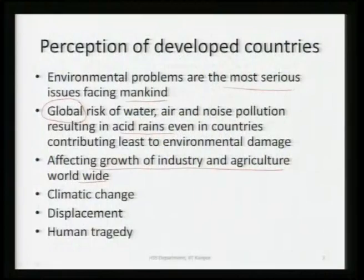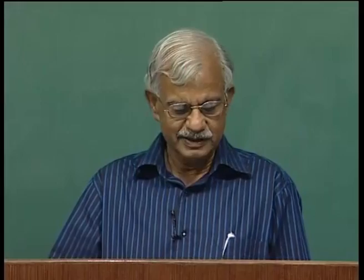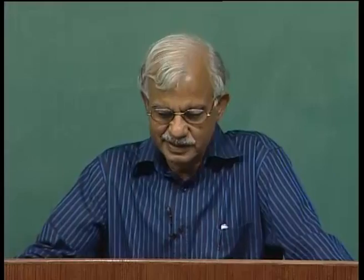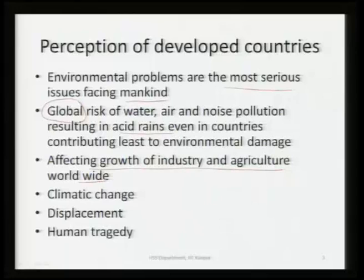Climate change is a leading consequence. Studies have shown that during the last 100 years or so, world temperature has been rising. There is a real danger that if the world temperature rises further by 2 degrees, this will be highly destructive of populations living in coastal areas, and some small island countries may even be submerged in the ocean. This environmental destruction or climate change is also leading to displacement of people from one part of a country to another and from one country to other countries, and in that sense is a cause of human tragedy.